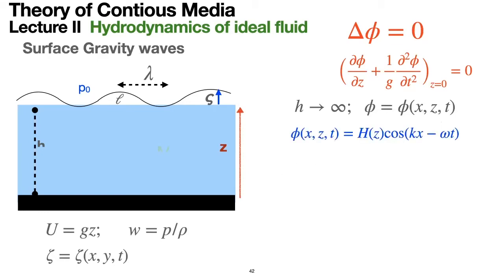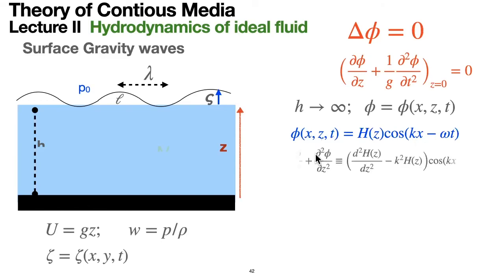I look for solutions assuming the potential phi equals a certain function of height H times the cosine of kx minus omega t. I am anticipating that there will be a wave — a periodically changing phenomenon in time and space — so it is natural to look for a solution of this form.